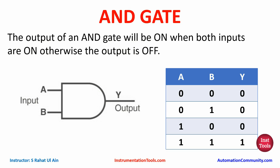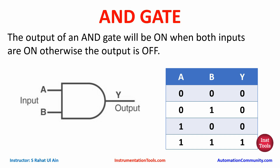The output of an AND gate will be ON when both inputs are ON, otherwise the output is OFF. If we have two inputs A and B, both inputs should be ON for output Y to be ON. As we can see in the truth table: when A and B are both false the output is false; when A is false and B is true the output is false; when A is true and B is false the output is also false. So for output Y to be true, all inputs must be ON.